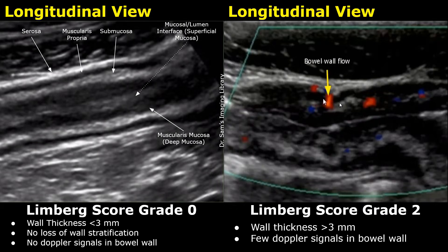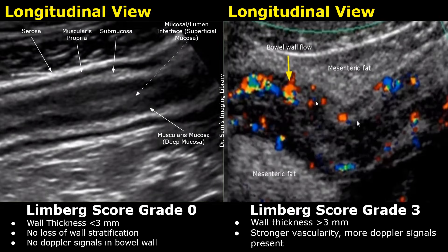In grade 2, wall thickness is greater than 3 millimeters and a few Doppler signals are noted in the bowel wall. Wall stratification looks preserved but some color Doppler signals are visible, hence the grade 2 score. In grade 3, the vascularity is stronger than grade 2 — a significant number of Doppler signals are seen. However, some areas still do not show increased vascularity, so it is classified as grade 3.